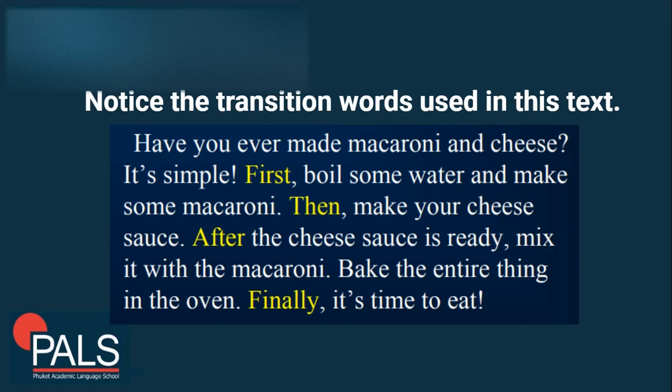Have you ever made macaroni and cheese? It's simple. First, boil some water and make some macaroni. Then make your cheese sauce. After the cheese sauce is ready, mix it with the macaroni. Bake the entire thing in the oven. Finally, it's time to eat. So this is an example — you can see how the transition words guide you through each step in order.